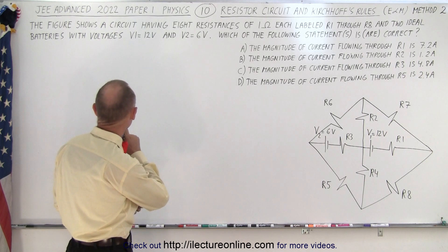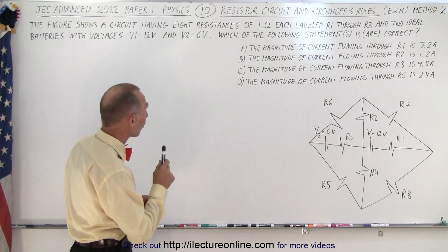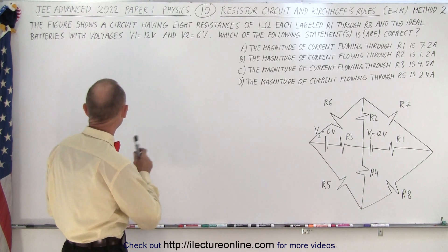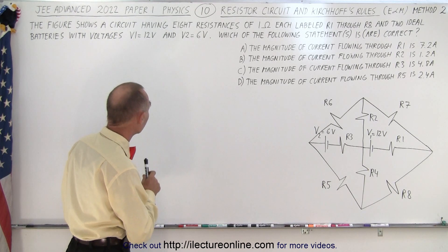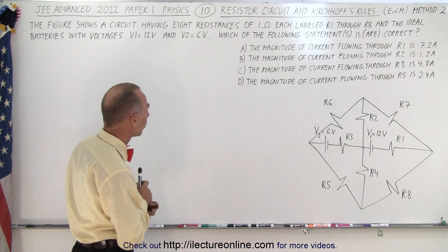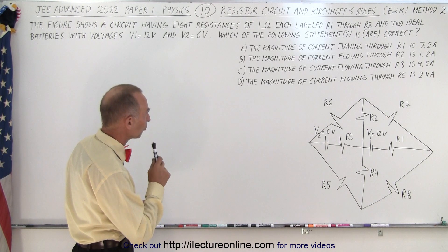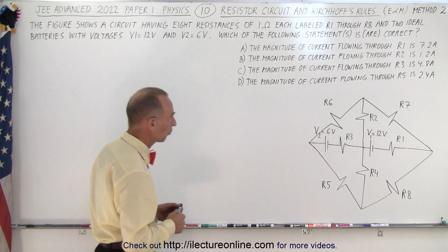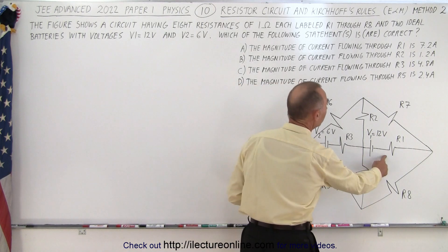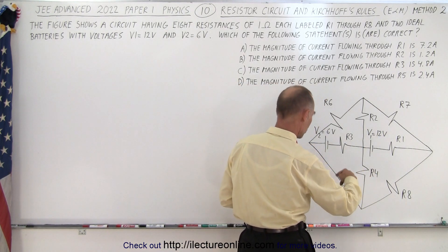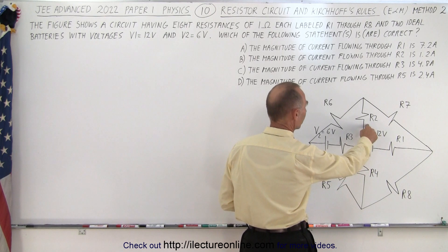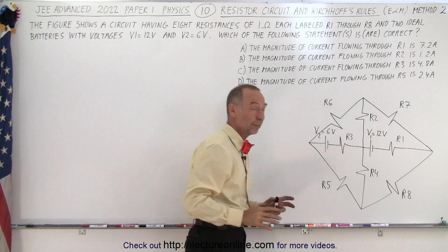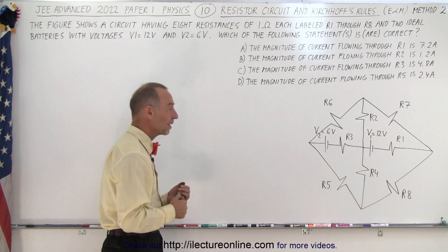The problem states that the figure shows a circuit having eight resistances of 1 ohm each, labeled R1 through R8, and two ideal batteries with voltages V1 equals 12 volts and V2 equals 6 volts. We need to determine which of the four given statements about currents through R1, R2, R3, and R5 are correct.